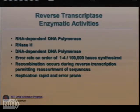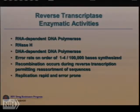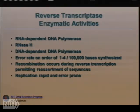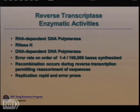Reverse transcriptase, which many of you use as a lab tool, is said to have a lousy error rate. I want to argue it's not a crummy enzyme — it's part of its pathogenic determinants. Its error rate is somewhere between one and four per 100,000 bases synthesized. Recombination can also occur during reverse transcription. This replication is both rapid and error-prone.